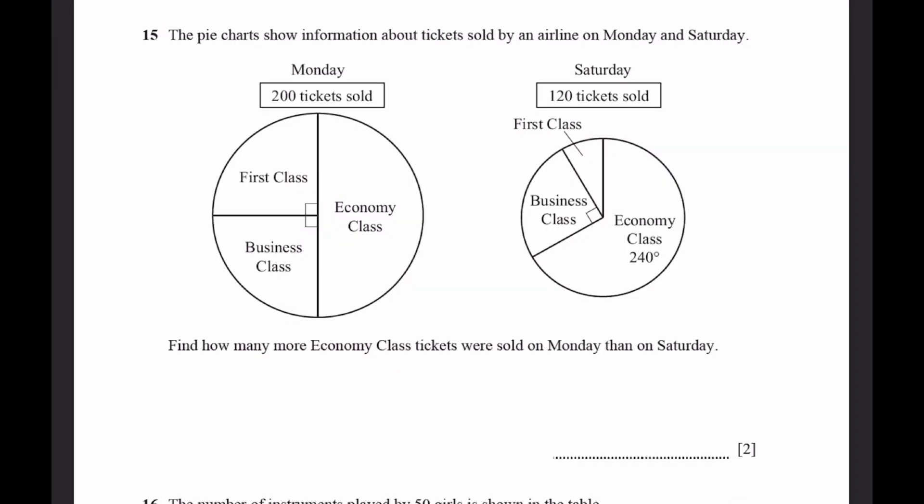Question 15. The pie chart shows information about tickets sold by an airline on Monday and Saturday. Find how many more economy class tickets were sold on Monday than on Saturday. On Monday, there were 200 tickets sold. And on Saturday, there was 120. On Monday, it'll be 360 minus 90 minus 90, the whole thing into 200 tickets. We know that first class and business class is right angle, which is 90 degrees. So that's 180 by 200. And we have to divide by 360. We get 100 economy class.